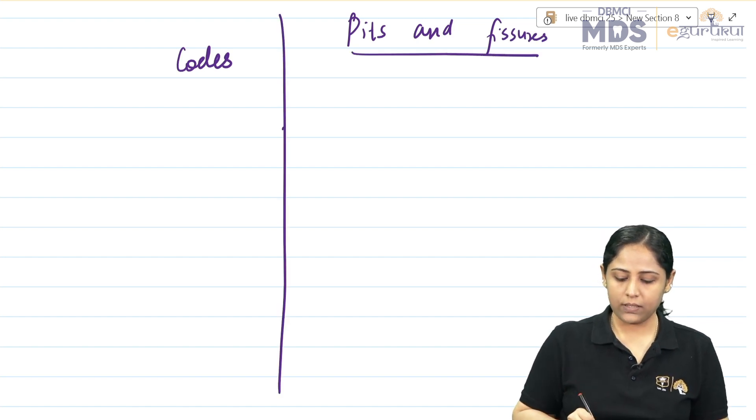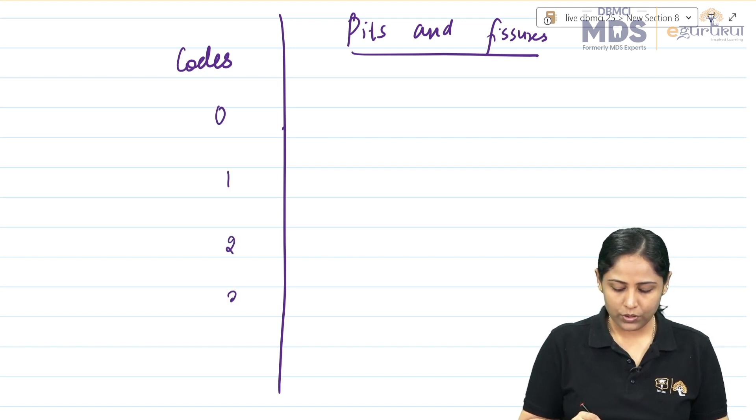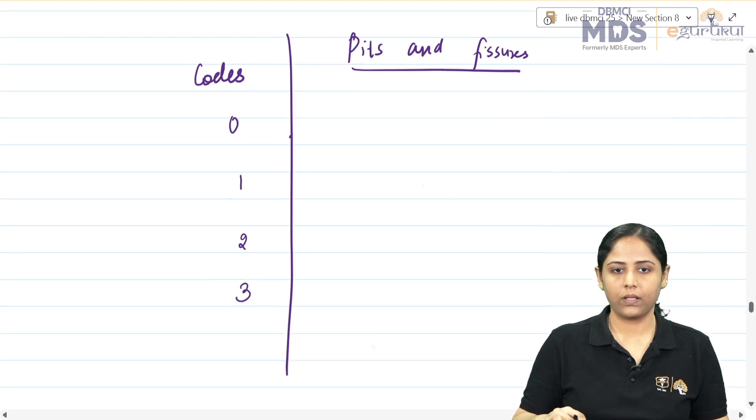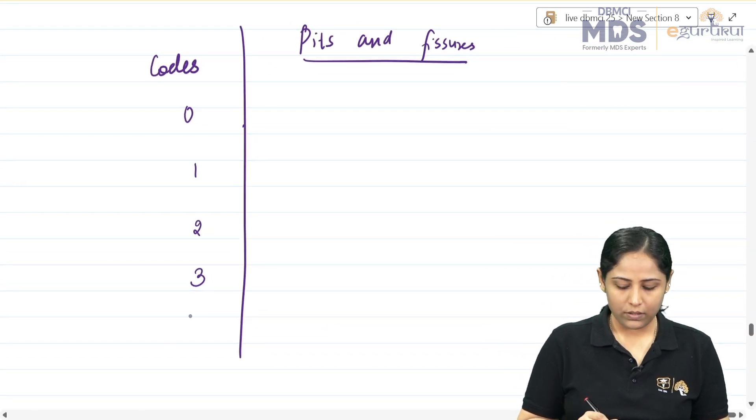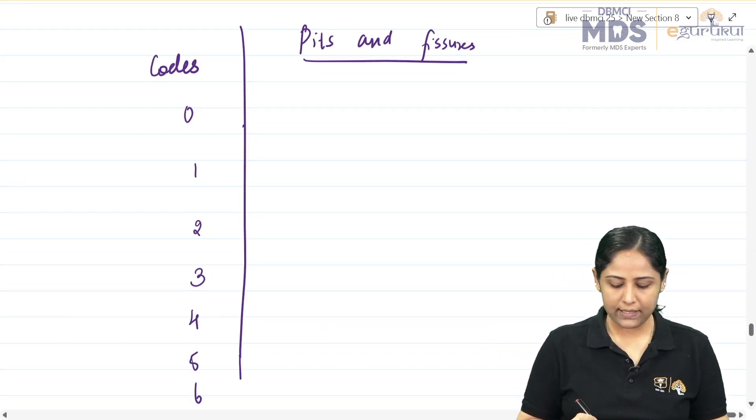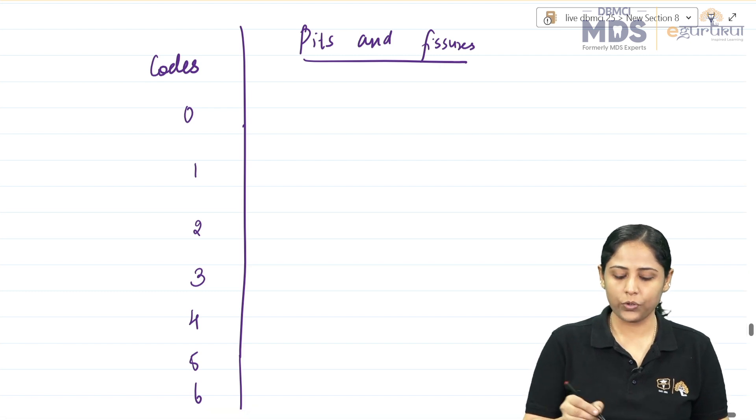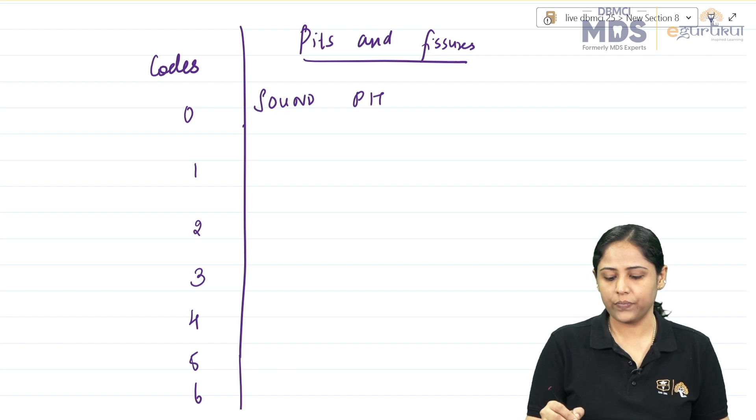The codes are 0, 1, 2, 3, 4, 5, and 6. Code 0 is sound pit and fissure.